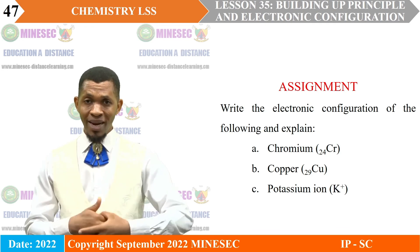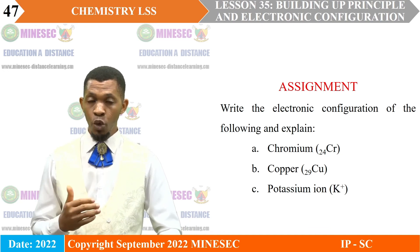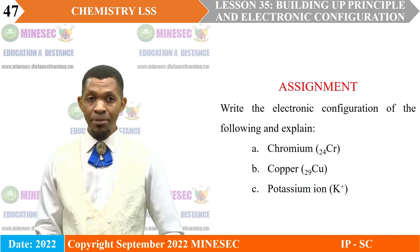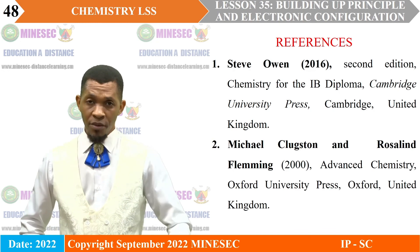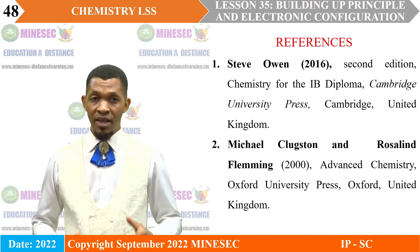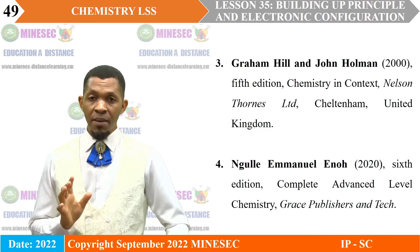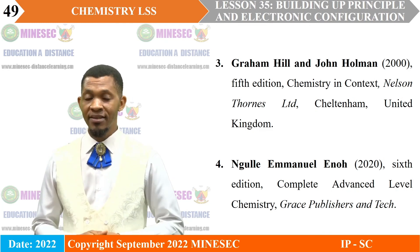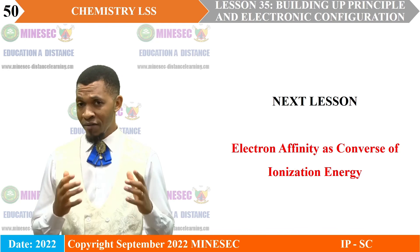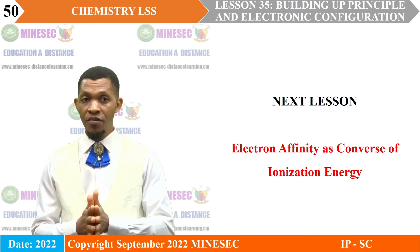Assignment: Before our next lesson, write the electronic configuration of the following and explain. A. Chromium. B. Copper. C. Potassium ion. References: Chemistry for the IB Diploma by Steve Owen; Advanced Chemistry by Michael Clarkson and Rosalind Fleming; Chemistry in Context by Graham Hill and John Holman; Complete Advanced Level Chemistry by Ngule Emanuel Eno. We have come to the end of this lesson. Our next lesson will be on electron affinity as converse of ionization energy.